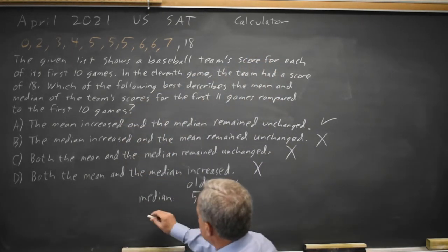Alternatively, we can calculate the mean, but this takes more time. If you add up the first 10 scores and divide by 10, you get a mean of 4.3 for the old mean for the first 10 scores.